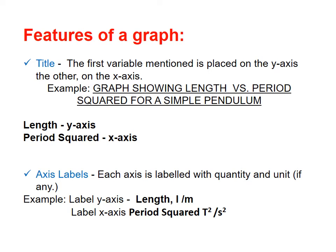Now we're going to look at the features of a typical graph in physics. Your graphs must have a title. In your title, the first variable that is mentioned is placed on the y-axis and the other variable is placed on the x-axis.